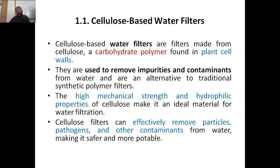Cellulose-based water filters are filters made from cellulose, a carbohydrate polymer found in the plant cell wall. As I mentioned when explaining carbohydrates, cellulose is present in plants and gives them high mechanical strength and support. These filters are used to remove impurities and contaminants from water and are an alternative to traditional synthetic polymer filters, helping to minimize waste.